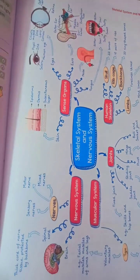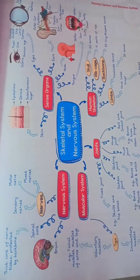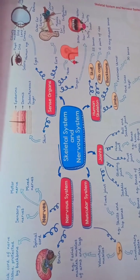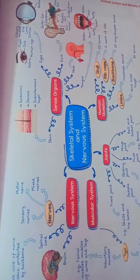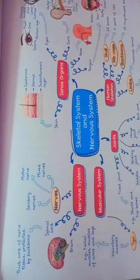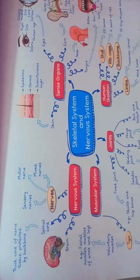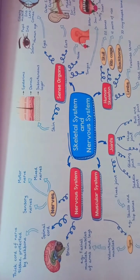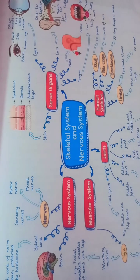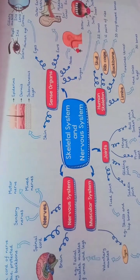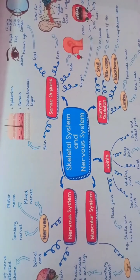Hello. Today is Class 5's Skeletal & Nervous System. The Skeletal & Nervous System consists of the Nervous System, Muscular System, Joints, Human Skeleton, and Sense Organs.